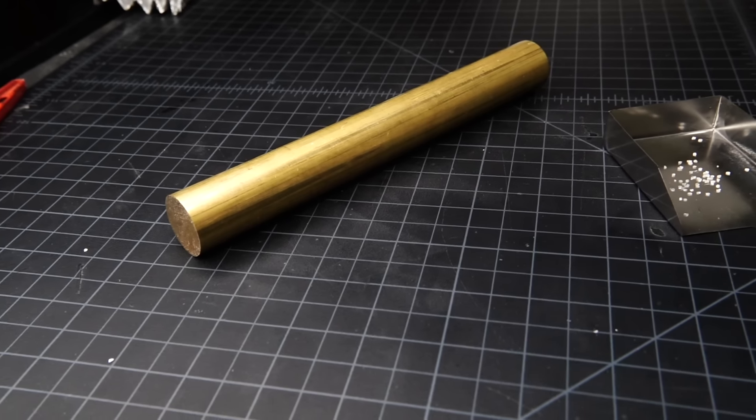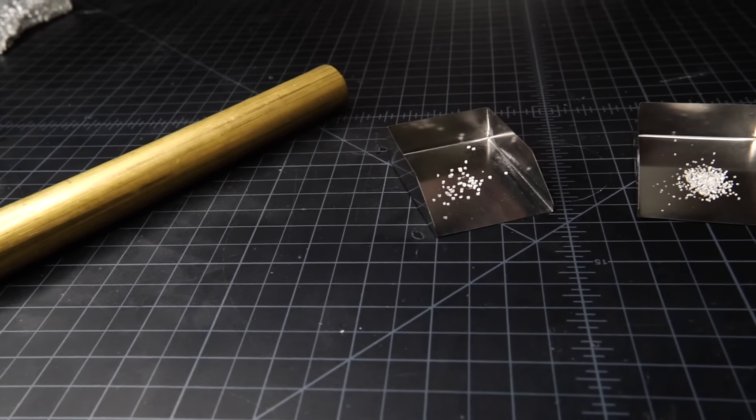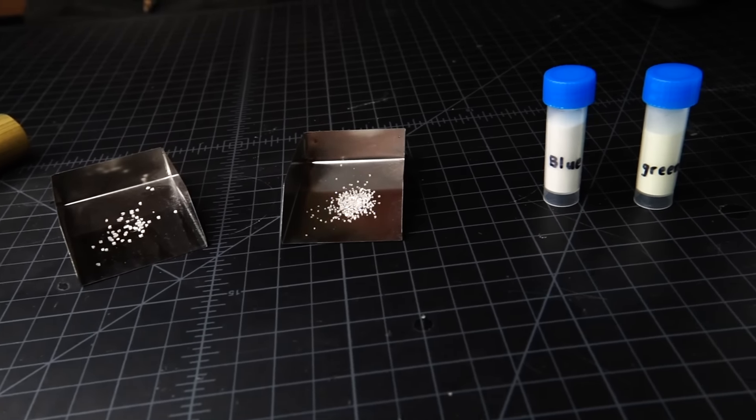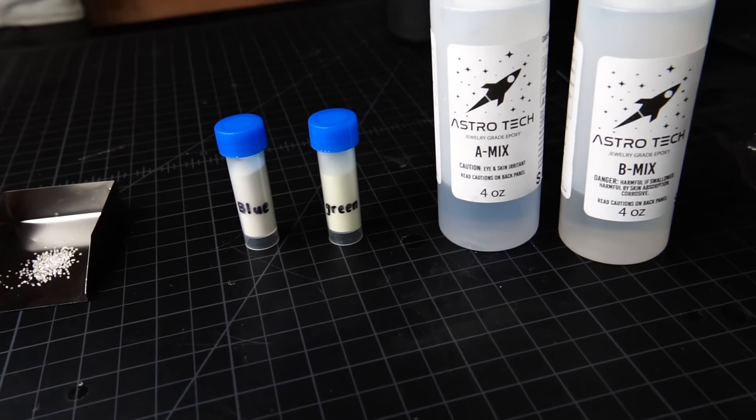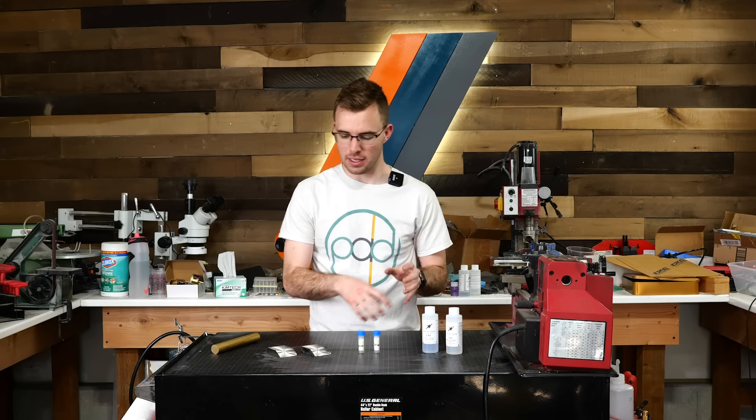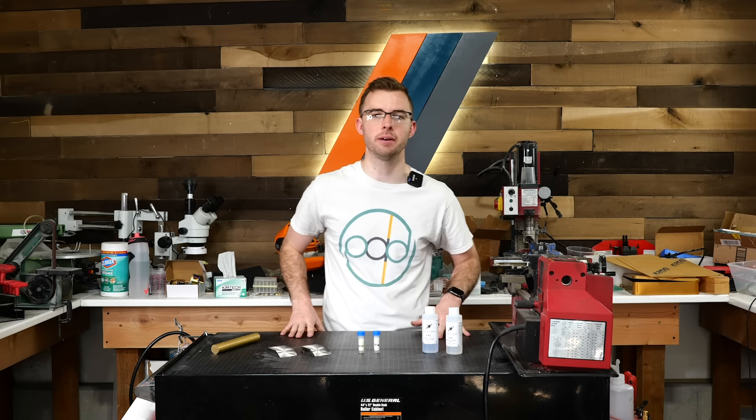The first step is going to be using this brass to create a blank that I can make a mold out of that we will use the Astrotech epoxy to pour into. Then we'll go ahead and get started on the inlaying steps and go from there. Let's go ahead and jump right into it.